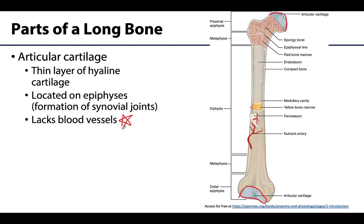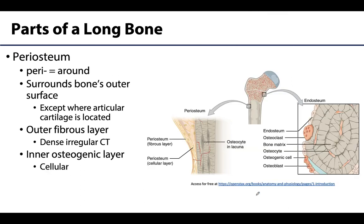Articular cartilage is actually a remnant of endochondral ossification, which is the major means through which most bones develop. Bones develop within a cartilage model and are eventually replaced by bone, but this remnant of articular cartilage stays on the bone throughout life. The periosteum is not bone — it is a connective tissue layer that surrounds the outer portions of the bone everywhere except where articular cartilage is located. Unlike articular cartilage, the periosteum is richly vascularized.